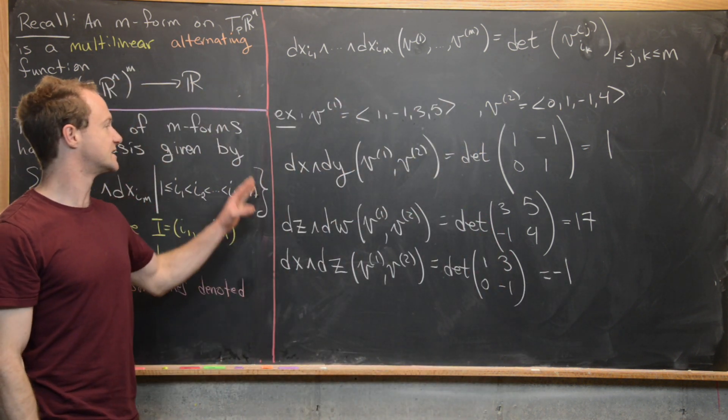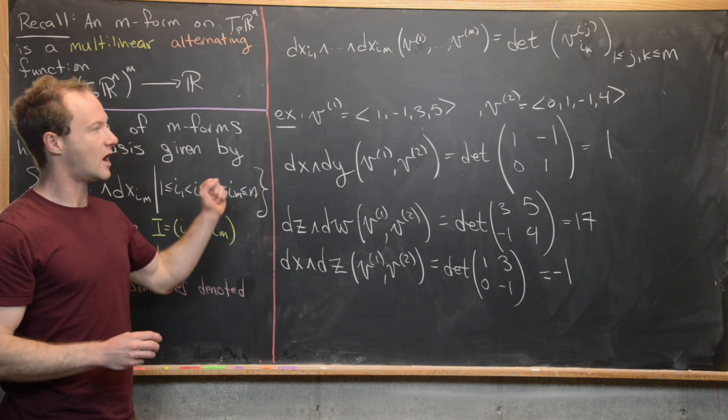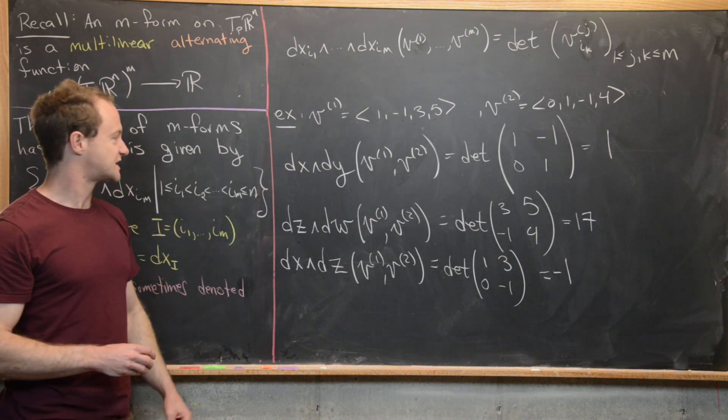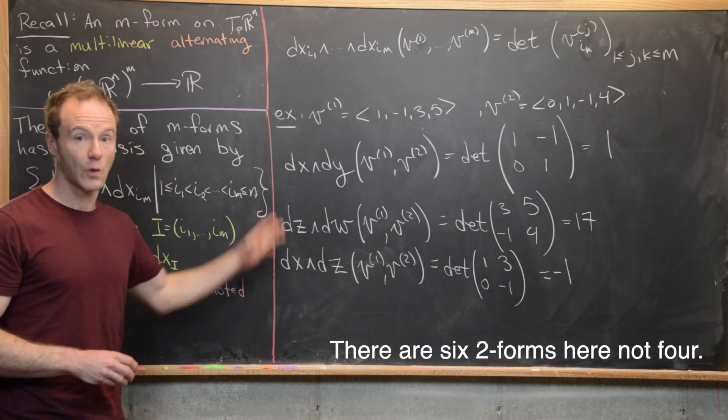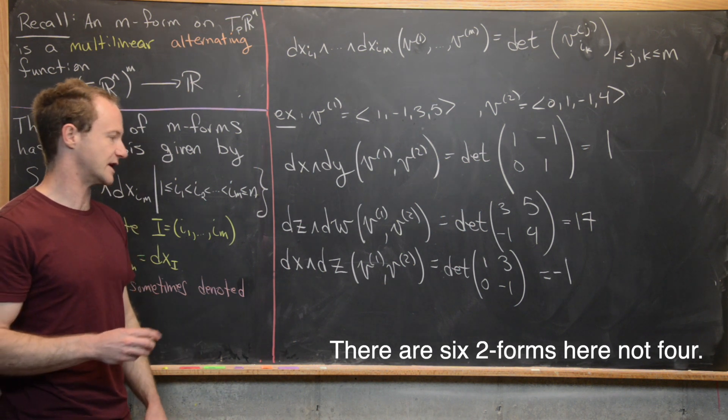Now the next thing that we can do is we know that all of our two forms on TPR^4, which is where our setup is, are spanned by these elementary two forms. So there are four such elementary two forms. So we've only exhibited three of them. I'll let you think about what the other one is.